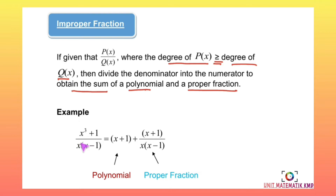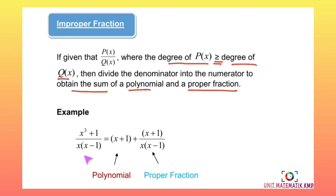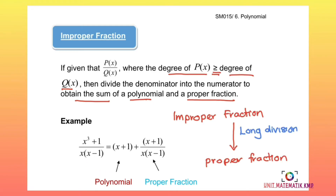For example, if we are given the expression x³ + 1 over x times (x − 1), the degree of the numerator is 3 and the degree of the denominator is 2. Since the degree of the numerator is more than the degree of the denominator, this is an improper fraction.